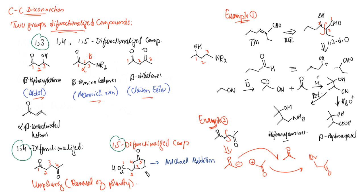For the last example of a 1,5 relationship, which involves Michael addition, consider this molecule. We can make the disconnection at this point to get two fragments: one bearing a negative charge — the Michael donor — and the other fragment is the Michael acceptor. The Michael donor can have an ester group or be equivalent to a diester compound.